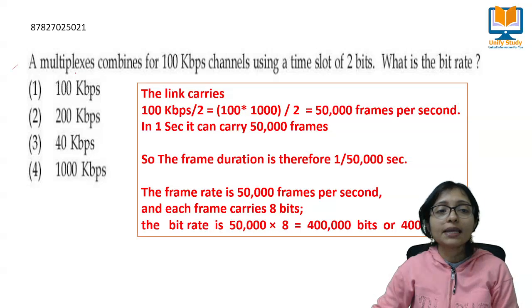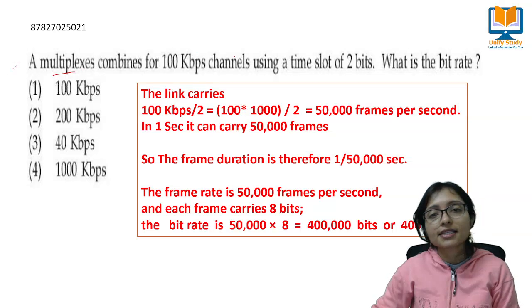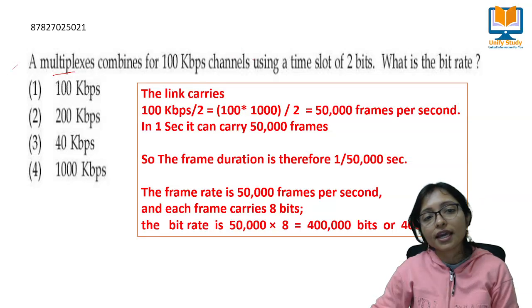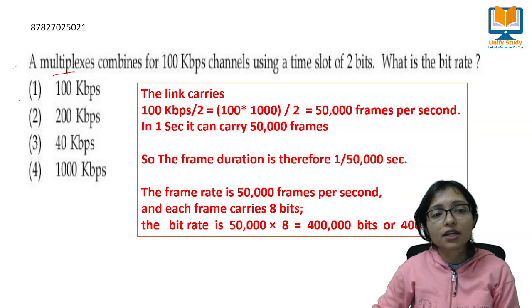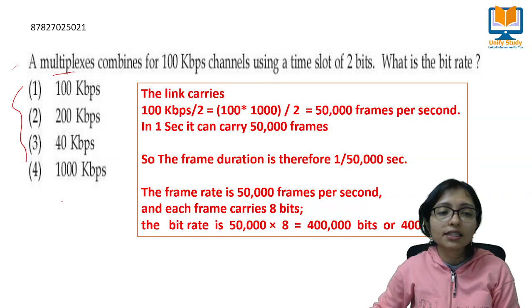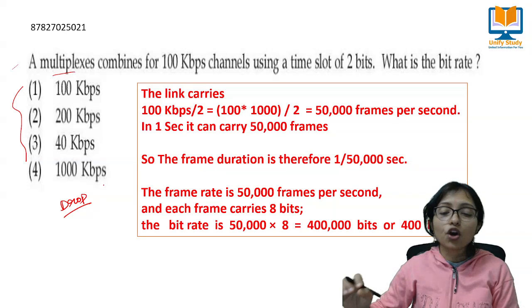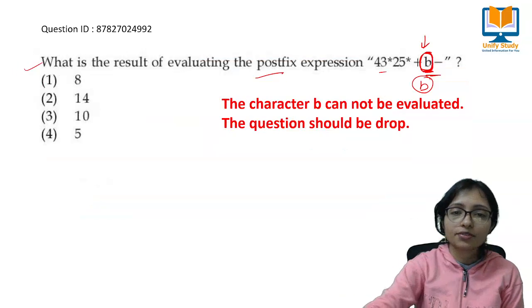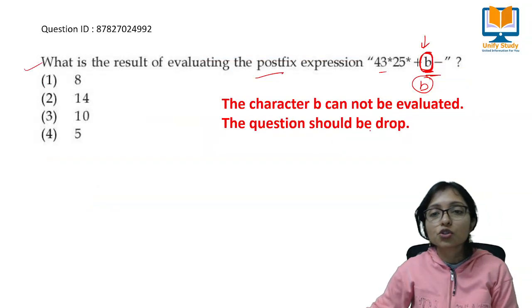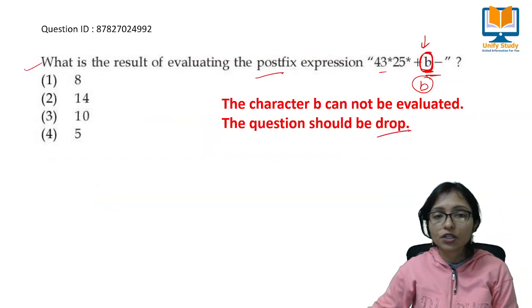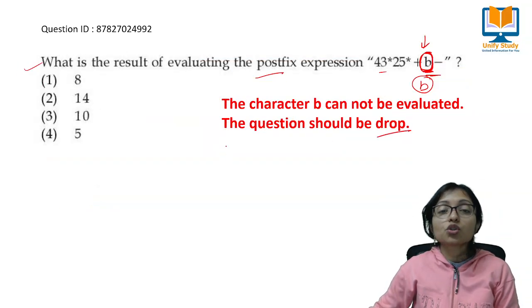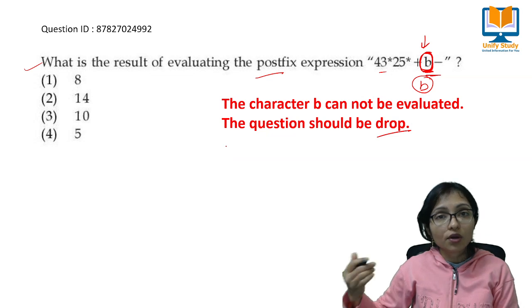The next question is about multiplexers. This question should be dropped entirely. You can select 'none of the above.' This question should also be dropped.